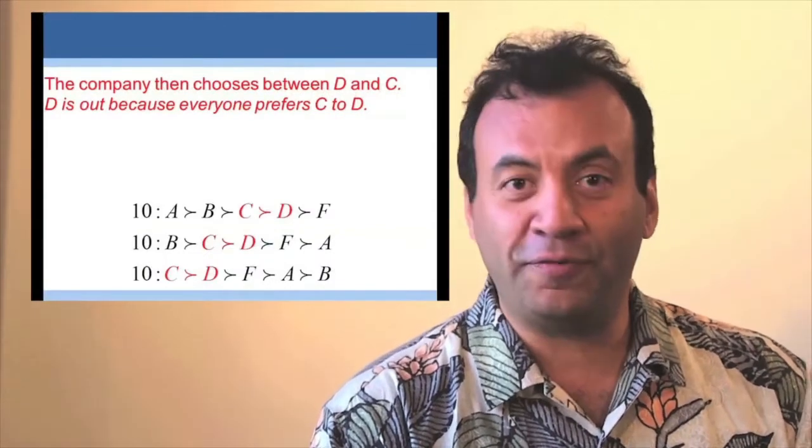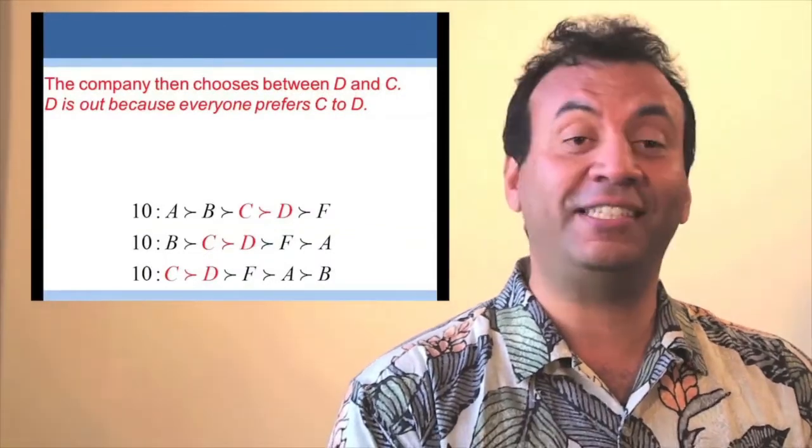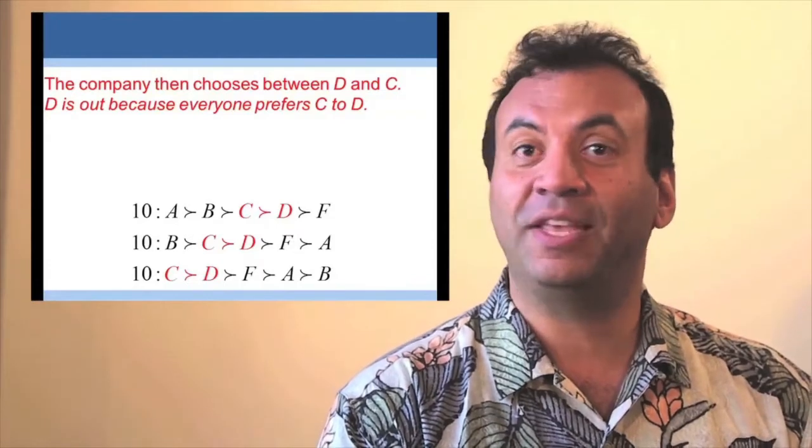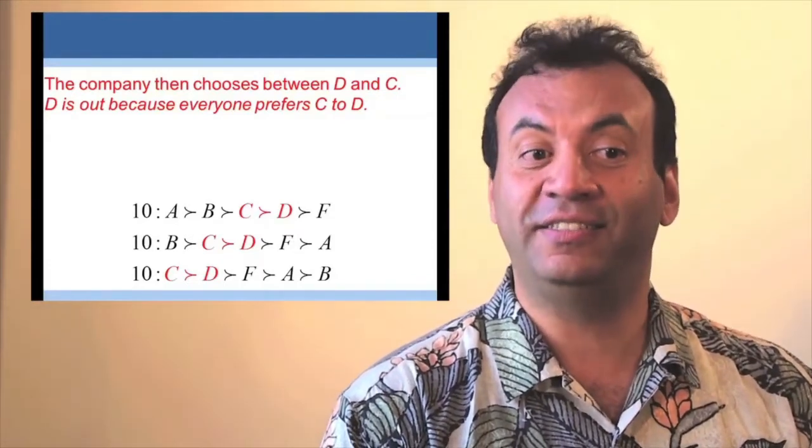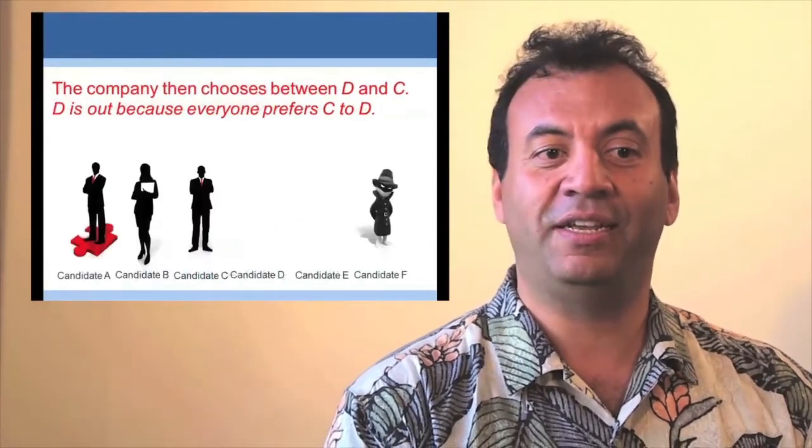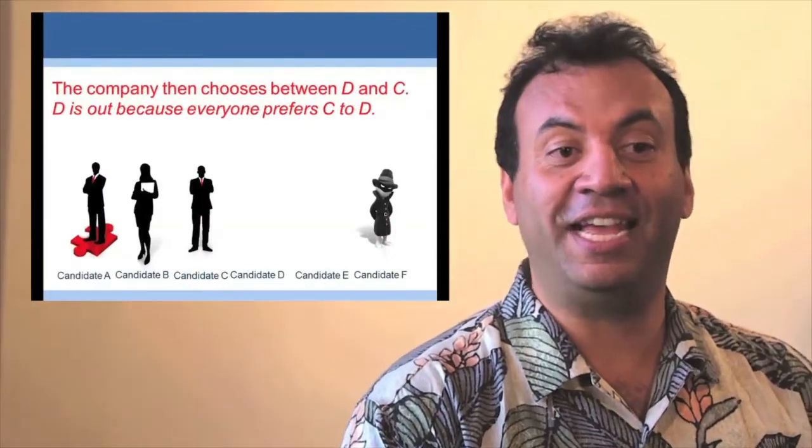Okay, everyone prefers C to D. So let's make a majority vote between C and D. Everyone prefers C to D, so C will win. Now we've eliminated D and E.